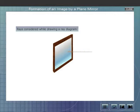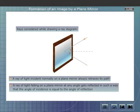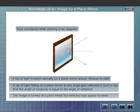Shown here are the rays considered while drawing ray diagrams to locate the position and nature of the image formed by a plane mirror. A ray of light incident normally on a plane mirror always retraces its path. A ray of light falling on a plane mirror at any angle gets reflected such that the angle of incidence is equal to the angle of reflection. The image is formed at a point where the reflected rays appear to meet.